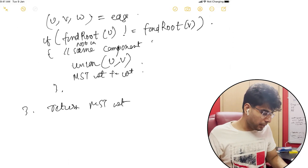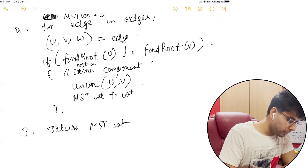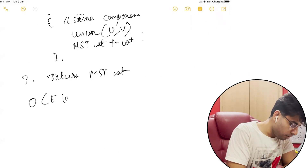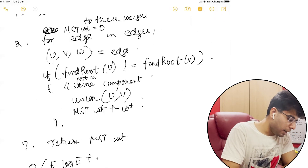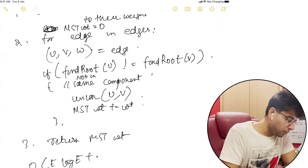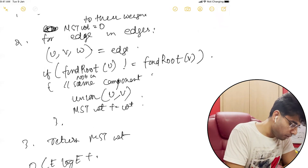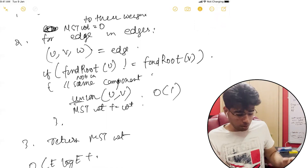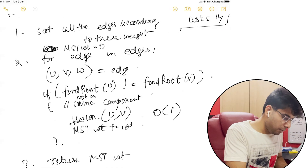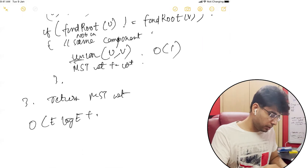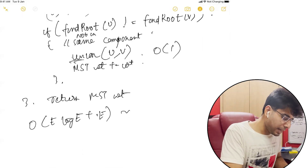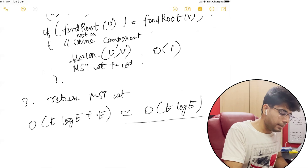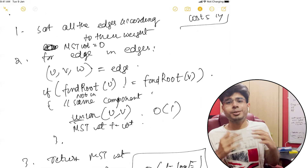I think that is pretty much it. The time complexity is O(E log E) for sorting all the edges, plus traversing the edges where the main operation is union — that is O(1) amortized time complexity. So at the end of the day, you have O(E × 1) for traversing the edges, which gives you O(E log E) time. That is the time complexity of Kruskal's algorithm.